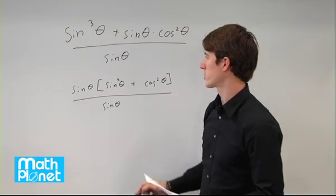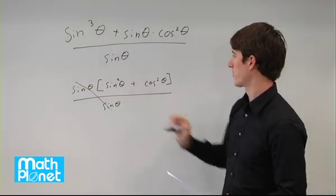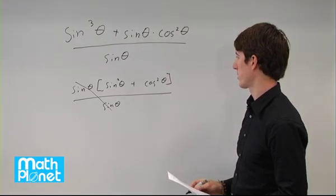So now the expression can be simplified just by canceling those sines. Now we're just left with sine squared theta plus cosine squared theta.